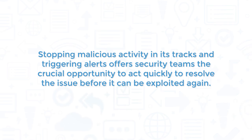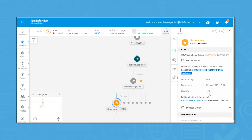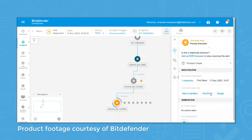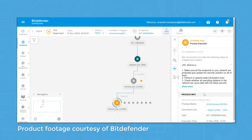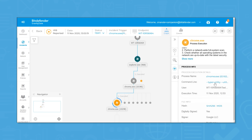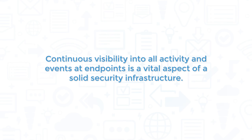Powerful automation for identifying and responding to malicious activity is key to blocking advanced attacks. Proactively predicting and preventing threats amplifies the capabilities of your security team. Stopping malicious activity in its tracks and triggering alerts offers security teams the crucial opportunity to act quickly to resolve the issue before it can be exploited again.